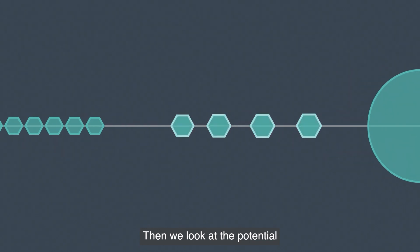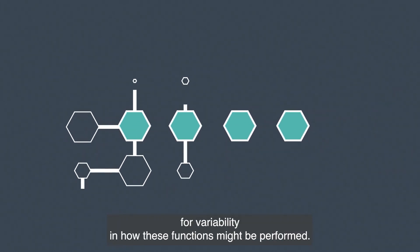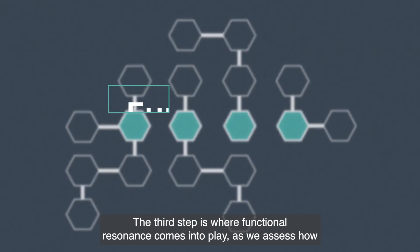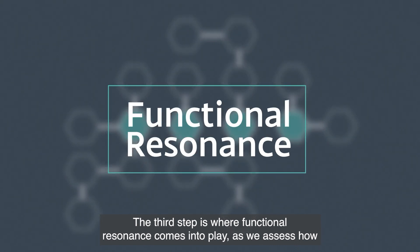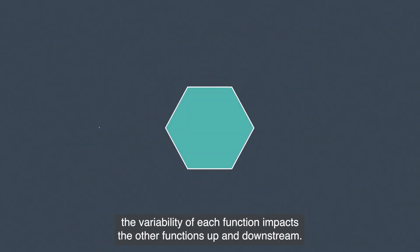Then we look at the potential for variability in how these functions might be performed. The third step is where functional resonance comes into play, as we assess how the variability of each function impacts the other functions up and downstream.